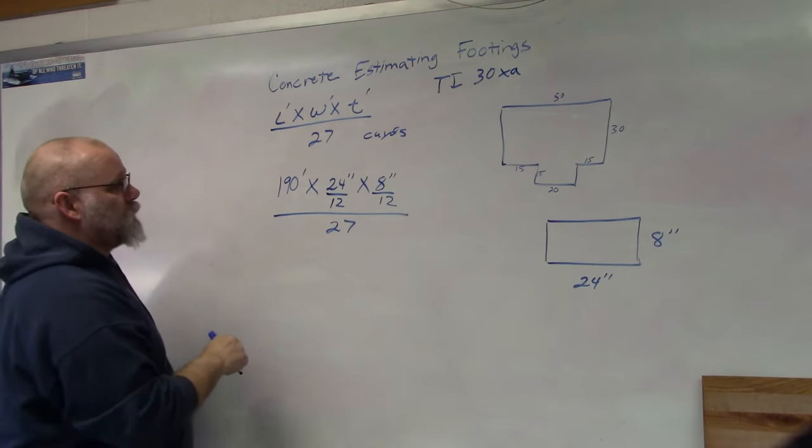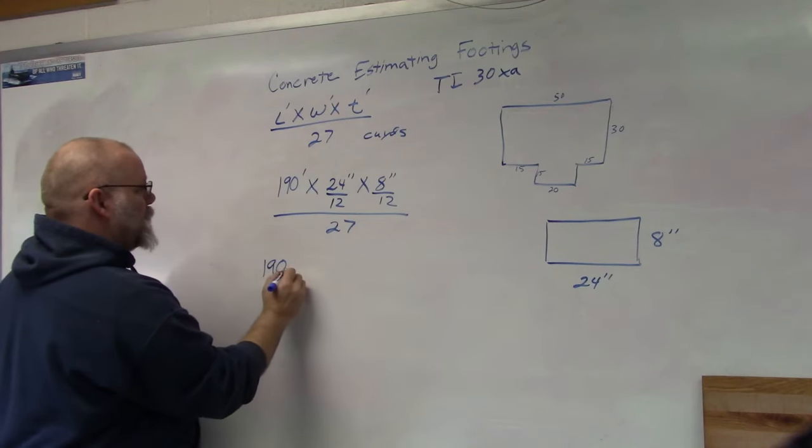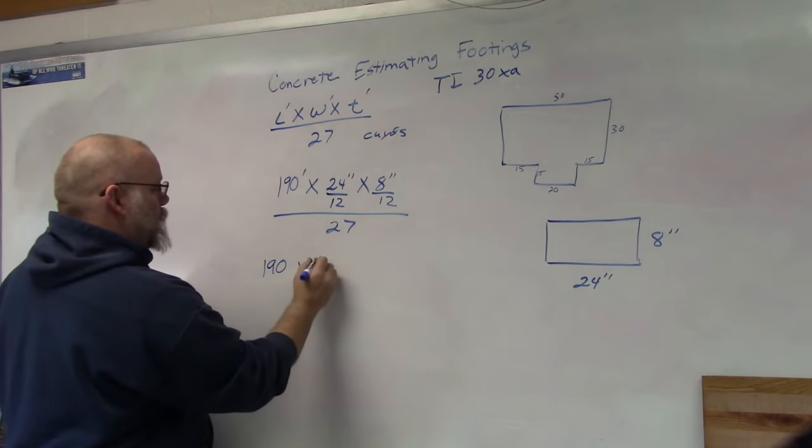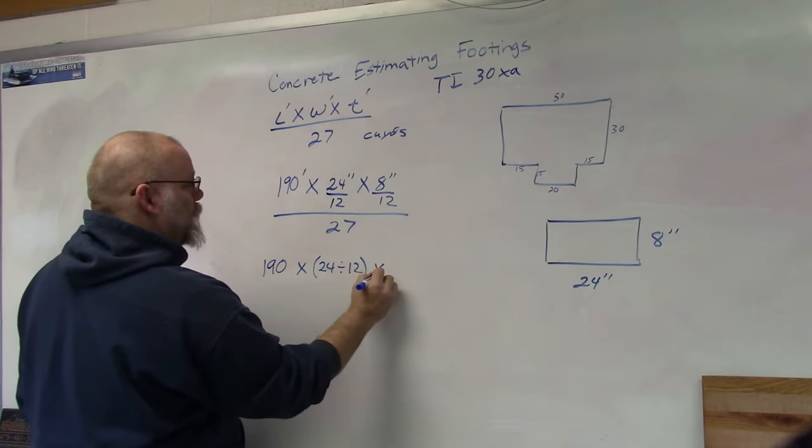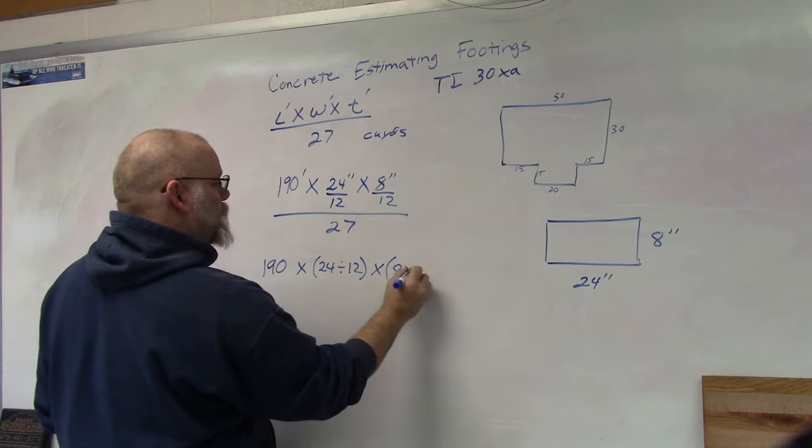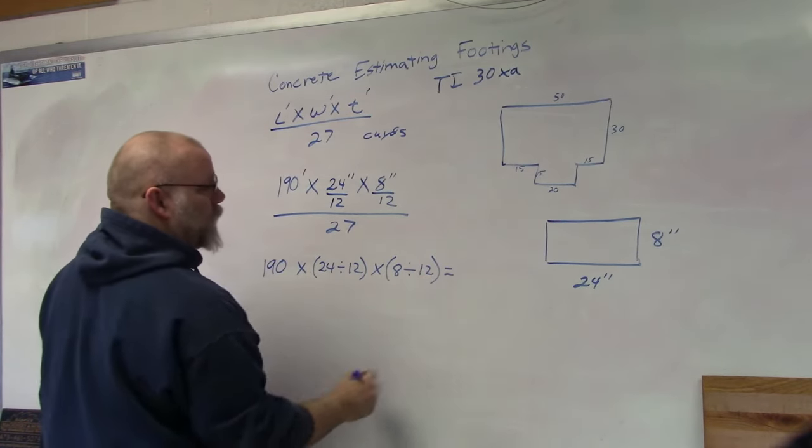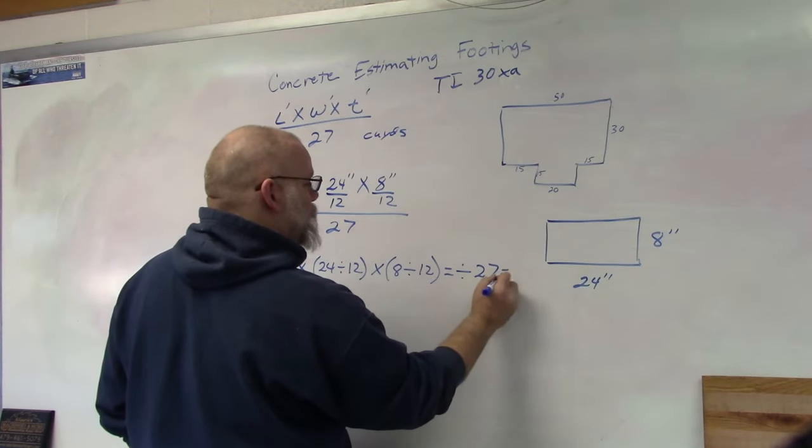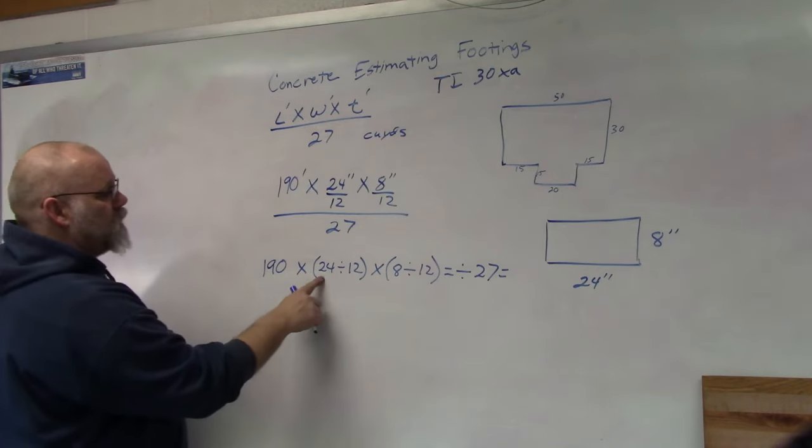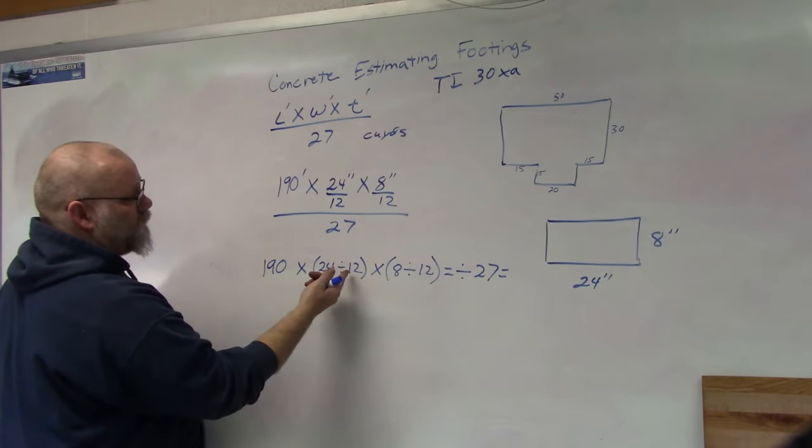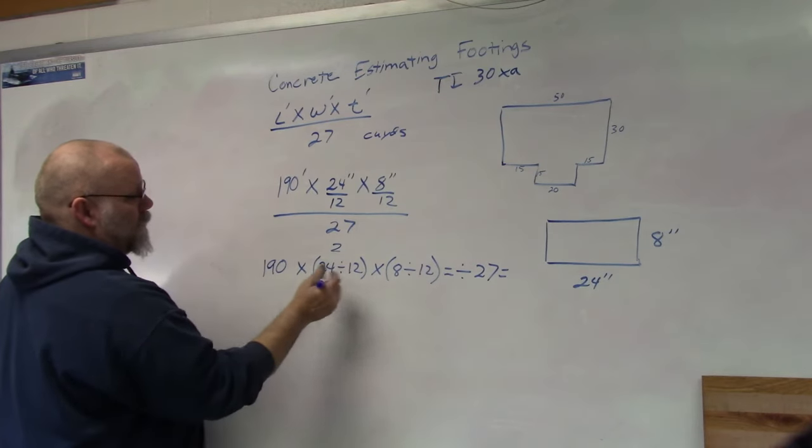So in your calculator, you're going to put 190 times 24 divided by 12 times 8 divided by 12 equals, then you're going to divide by 27 and hit equals again. Now for this one, if you know what this is, 24 divided by 12, everybody knows you could put that down as 2, so you could nix this part.